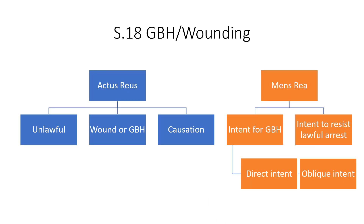So we've covered all of these elements. Section 18 is very similar to section 20 in terms of the actus reus — the difference is in the mens rea. You need to be skilled at spotting the level of intent the defendant has in a scenario in order to identify the correct offence. Look at the language: phrases like 'he really meant to do it' or 'he wanted to do it' are indicators. Practise past exam questions constantly and ask your teacher to check them. This is the end of the non-fatal offences videos — the next one will be on murder. Thanks for watching.